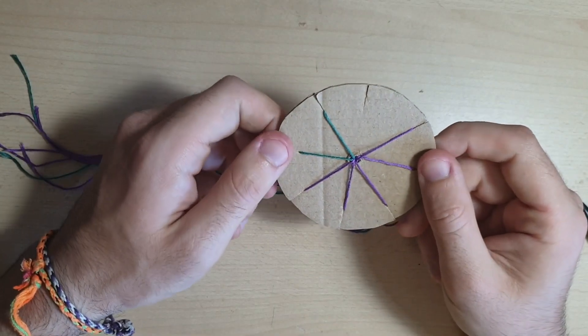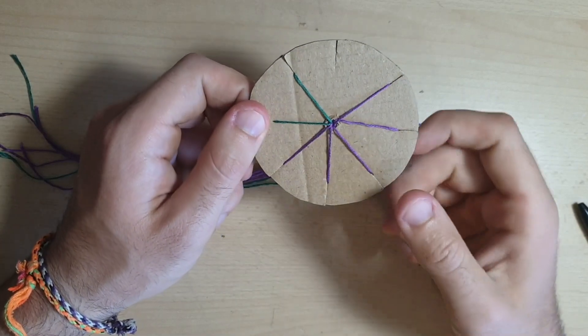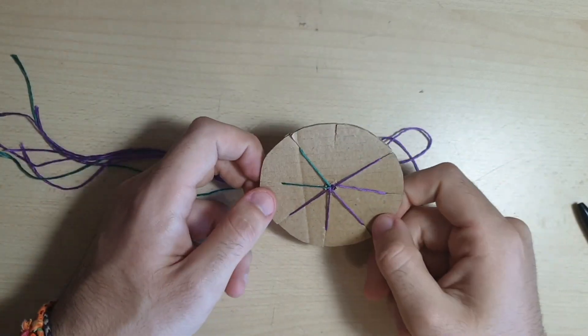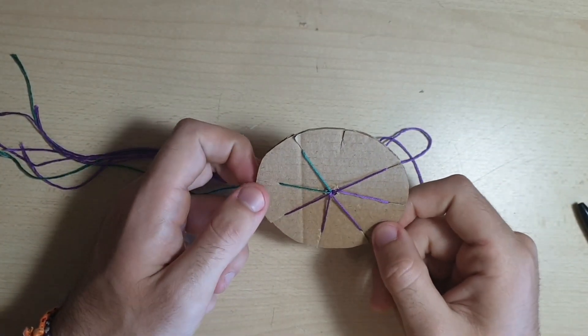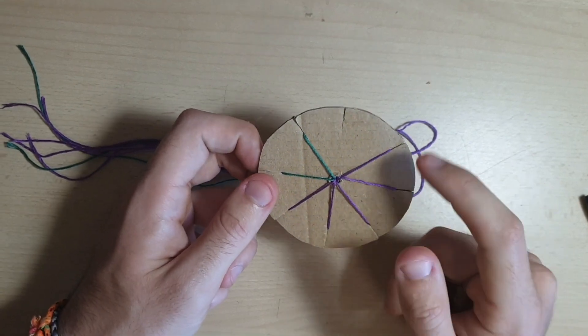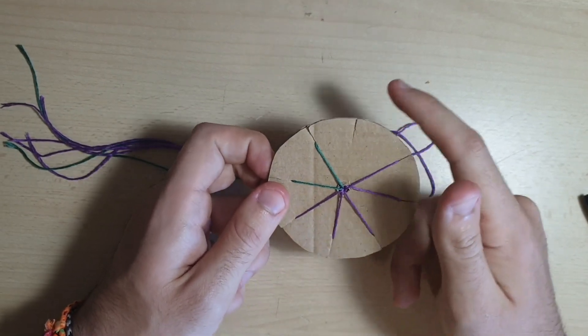So now, you should have seven of the eight slots with a strand in, and one of them is empty. That's good. What you need to do is make sure you've got the empty slot facing away from you at the top, like this.